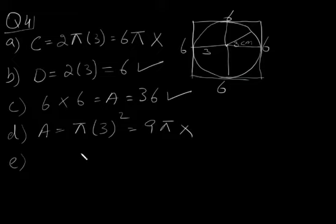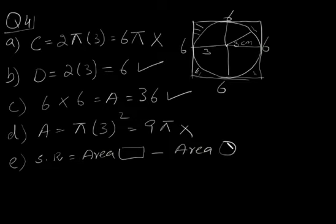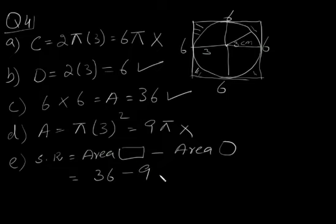In part E, it asks for the shaded region. The shaded region equals the area of the square minus the area of the circle. If you subtract the area of the circle from the square, you are left with only the shaded region. So that is 36 minus 9π, which is an irrational number.